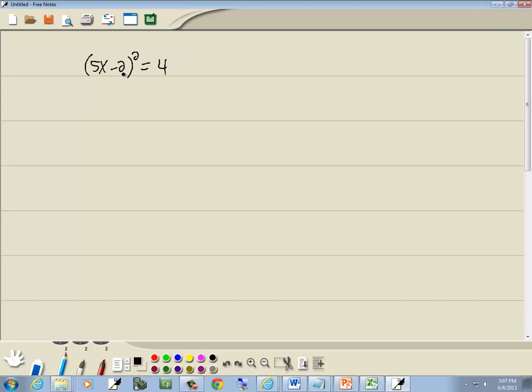The square root property says if you've got something squared equal to something else, then you drop your squared and you put plus or minus square root around the other side.